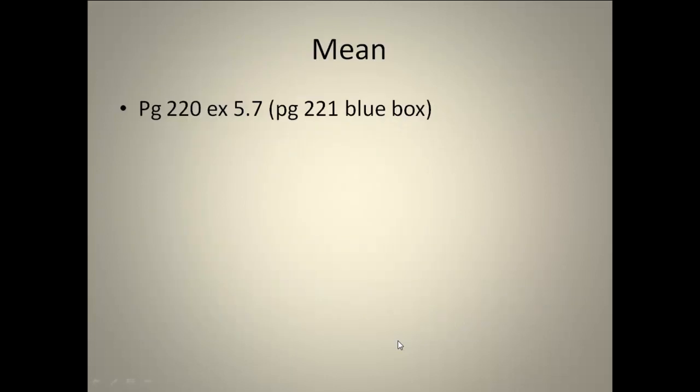Page 220, example 5.7. This one is talking about bank tellers. They give us a discrete random variable distribution here. X represents the number of tellers that are busy with customers. In that very far left-hand column, they tell us that we have 0, 1, 2, 3, 4, 5, and 6. So that's the number of busy tellers.